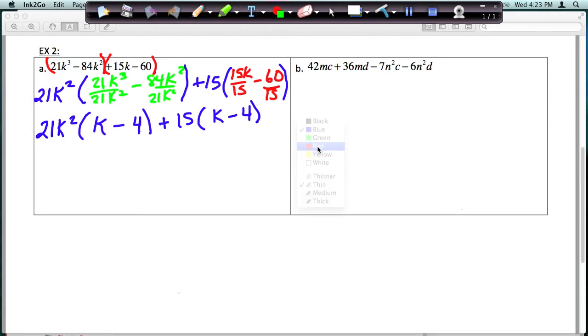So again, we know if we've done this right, these factors right here are the same, which they are in our case. So we have a k minus 4 that they have in common, so I'm going to pull that out in front. And then what I have left, once I pull that out, over here I have a 21k squared, and over here I have a positive 15. And that's factored.